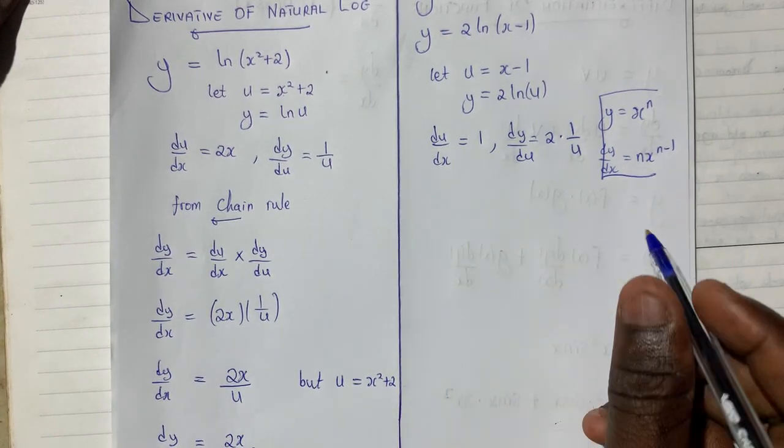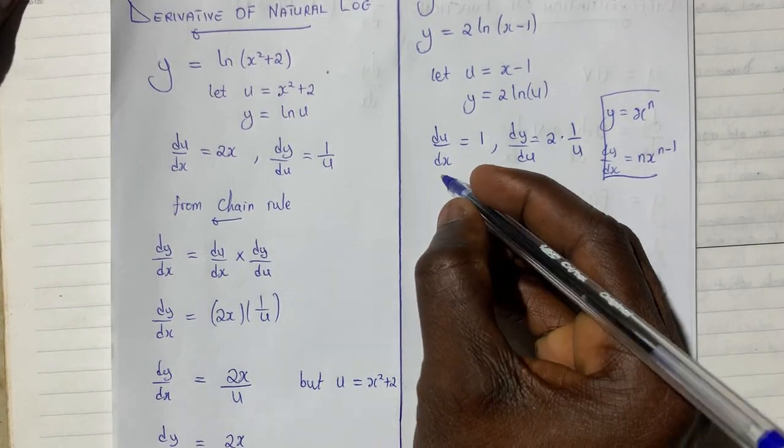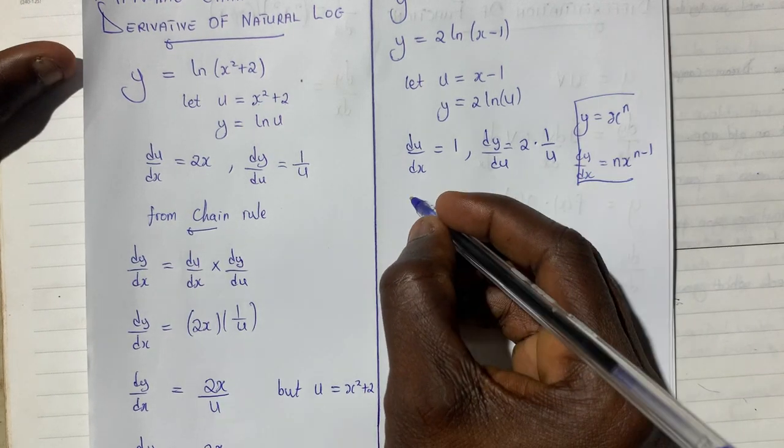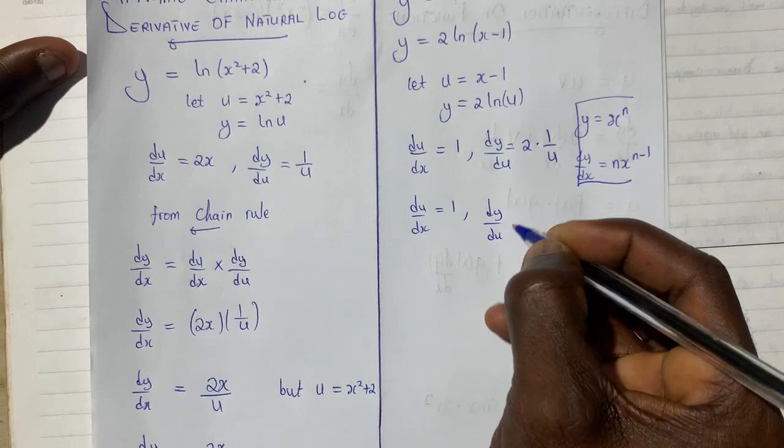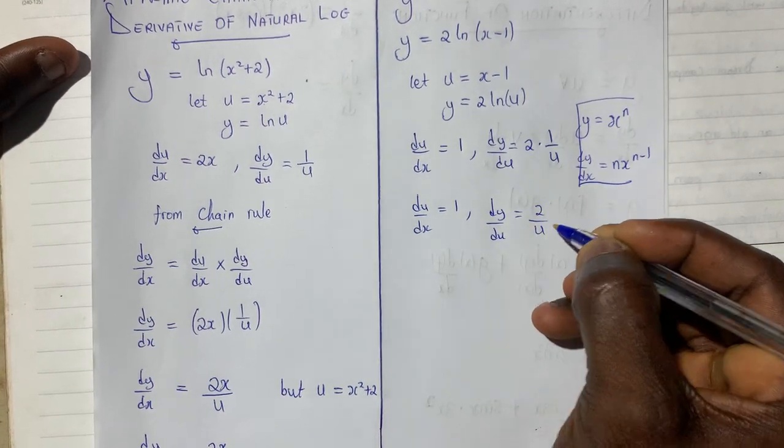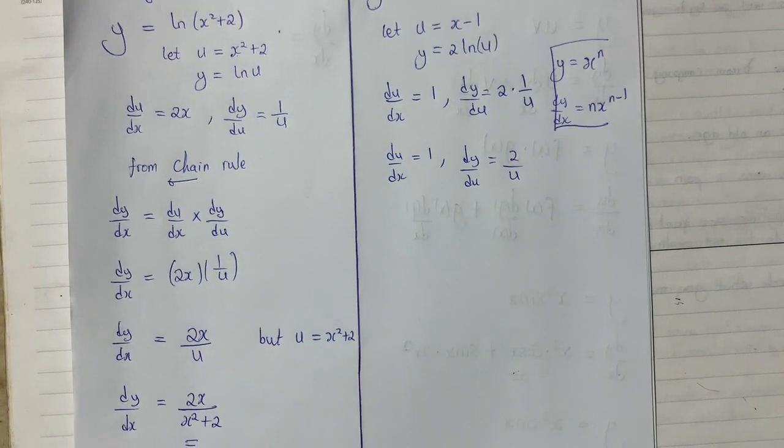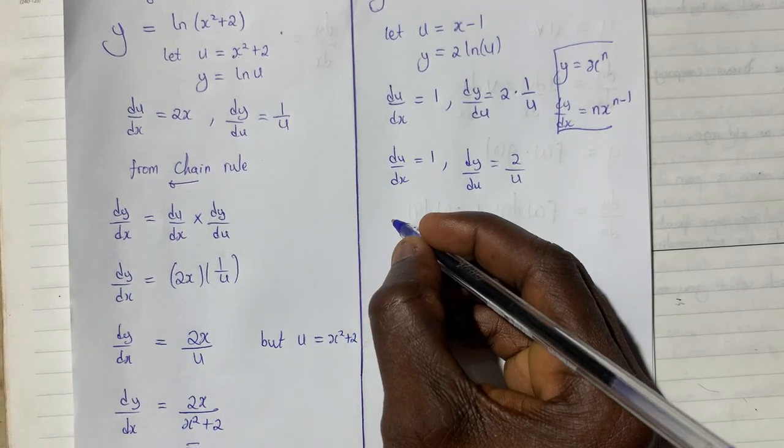I can rewrite this by saying du dx equals 1, dy du equals 2 over u. Now from here, I will apply the chain rule by saying from chain rule.